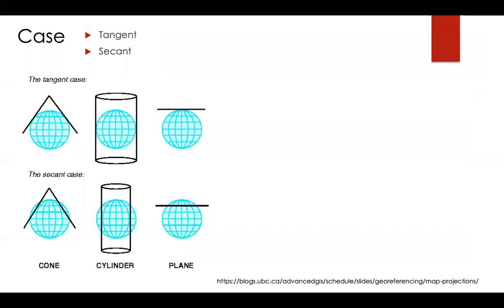Here's more on the different cases for each of the different developable surfaces. In a tangent case, for a cone, it touches the globe like this. In a secant case, it looks like that.